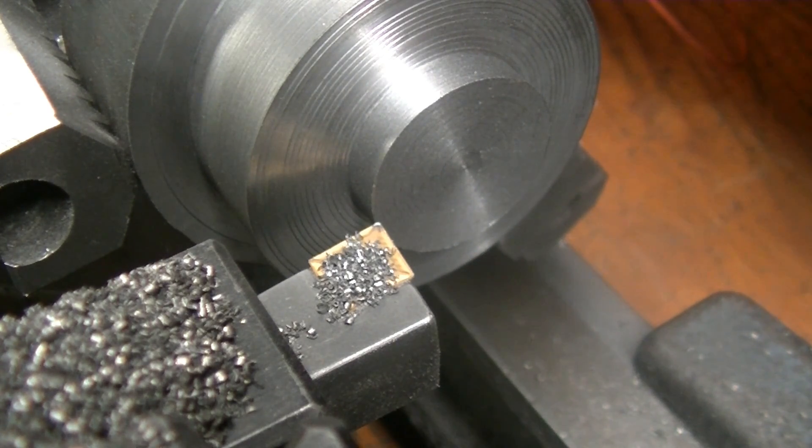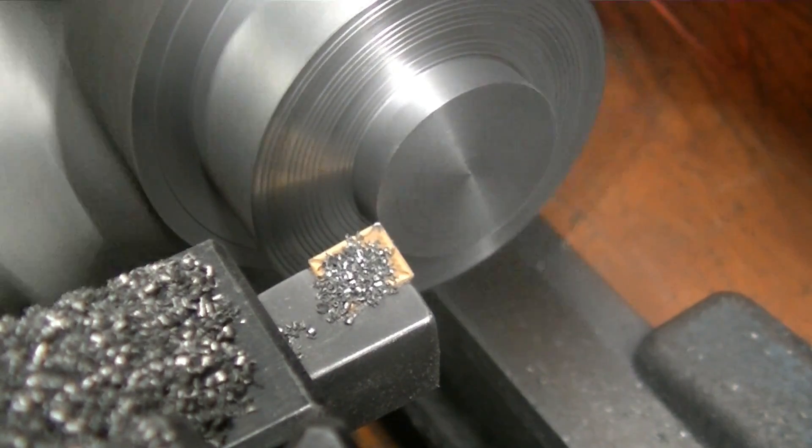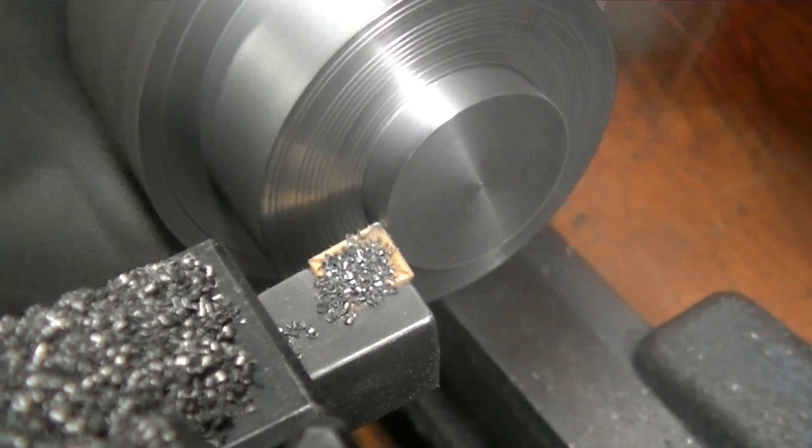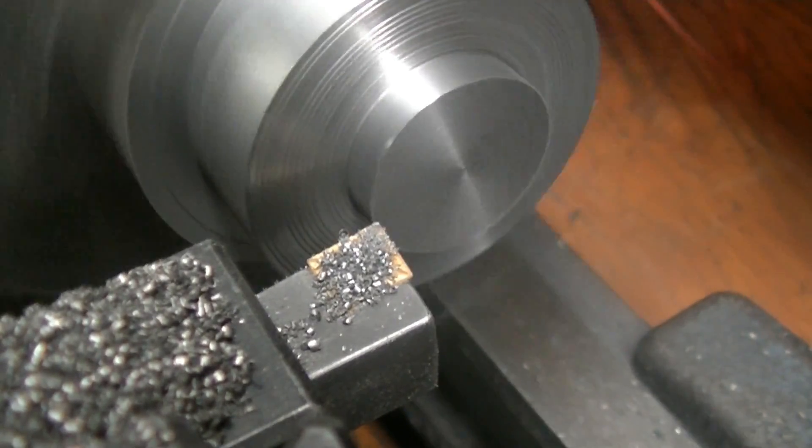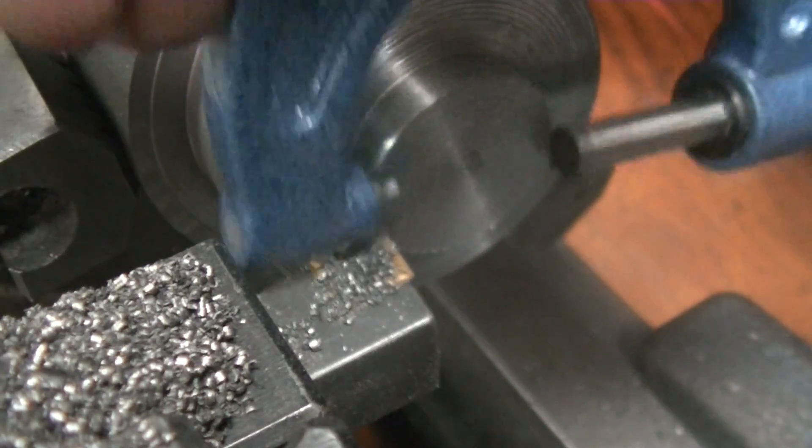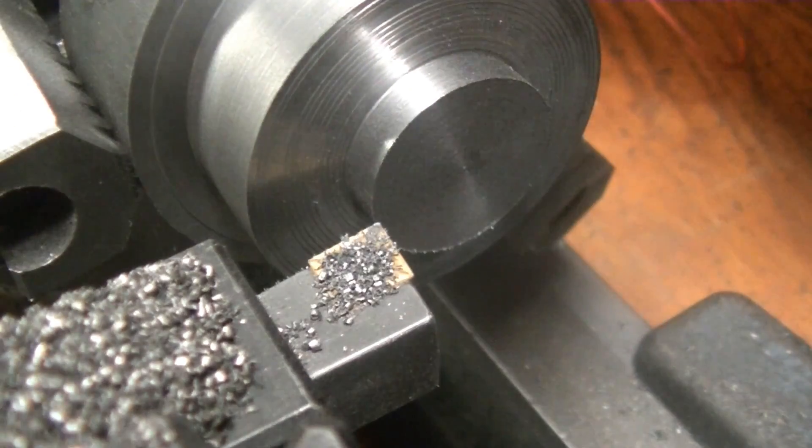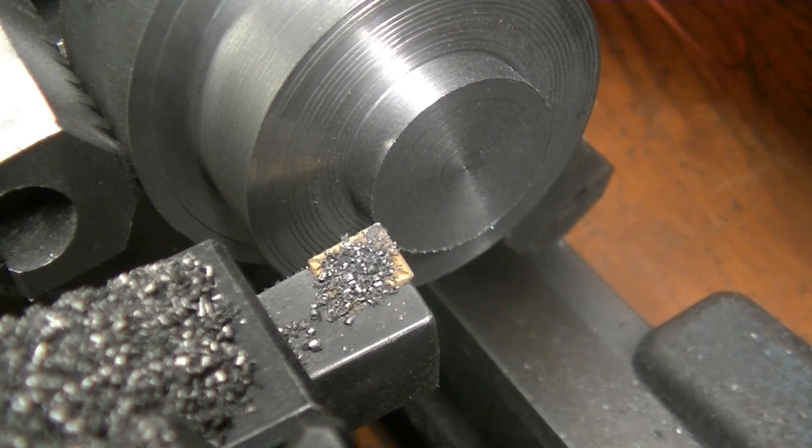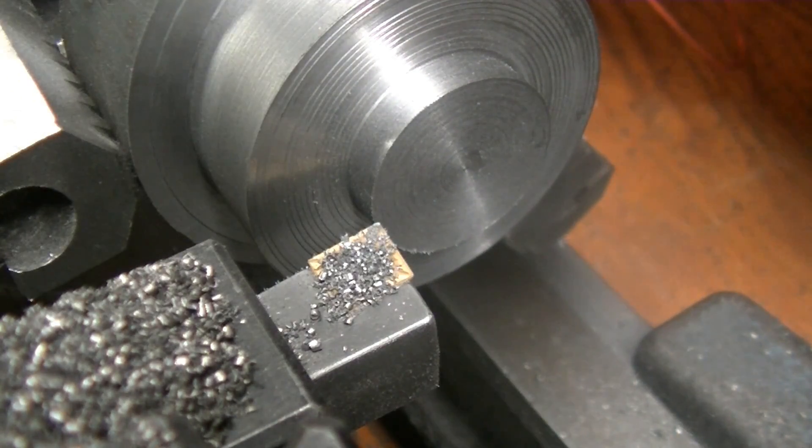Actually, right on the money is not what I want. I want it to be a little smaller than one inch, so I'm going to do a spring pass. There's a little bit of fuzz coming off. All right, perfect. That's like one thou under.